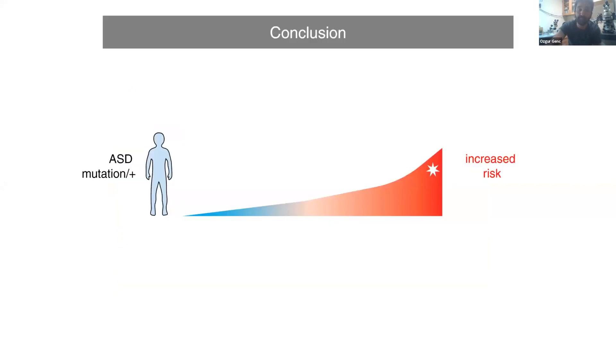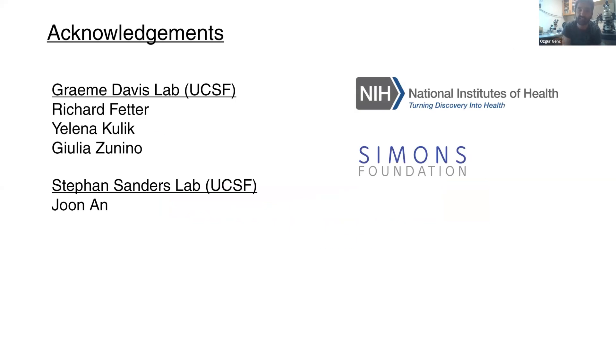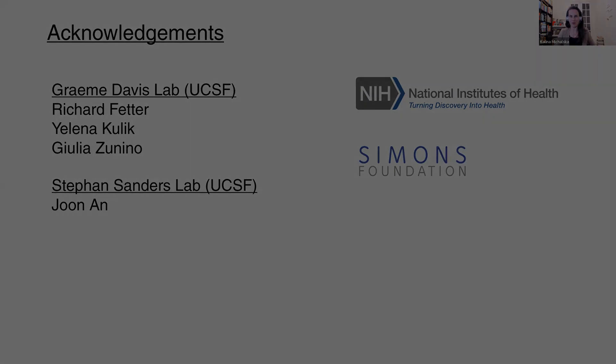Today I tried to give you an overview of how we see homeostatic plasticity as a protective buffer that constrains the effects of autism mutations, the de novo mutations, and reduces the phenotypic severity. With that, I would like to thank my lab, the Ray Davis lab, Rick Feather, Raquel and Acrylic, Julia Zunino, and our collaborators Stephan Sanders and Juna. Thank you, and please welcome your questions. Thank you Ozgur, this was fascinating.